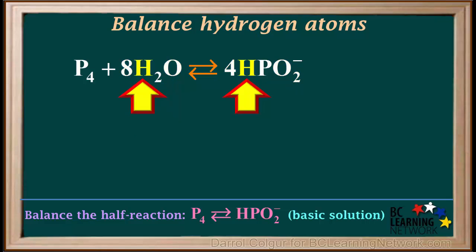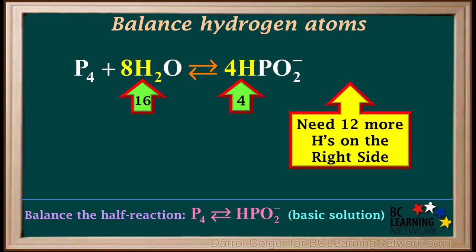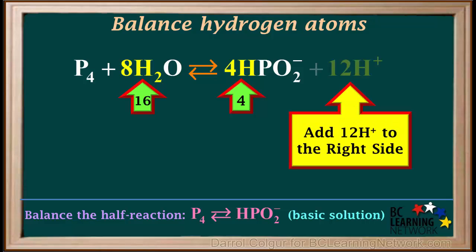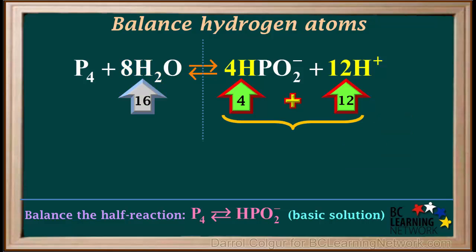The next step is to balance hydrogen atoms. At this point, we have 16 H's on the left side and 4 H's on the right side. So we need 12 more H's on the right side. To do this, we add 12 H⁺ ions to the right side. So now we have a total of 4 plus 12, which equals 16 H atoms on the right side. So hydrogen atoms are now balanced.